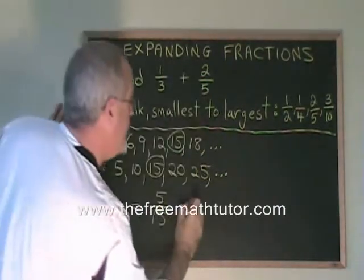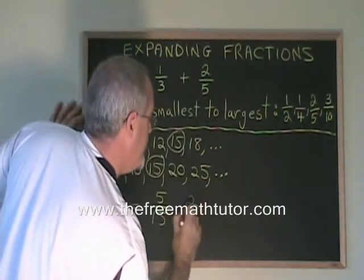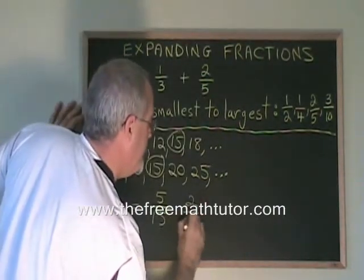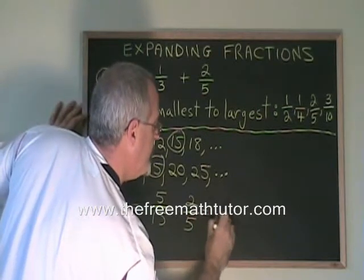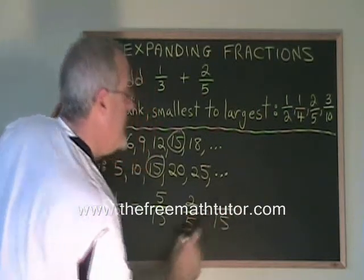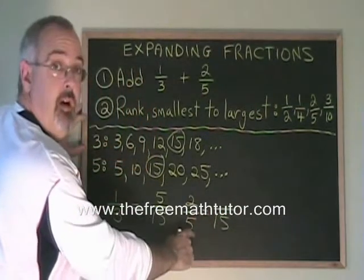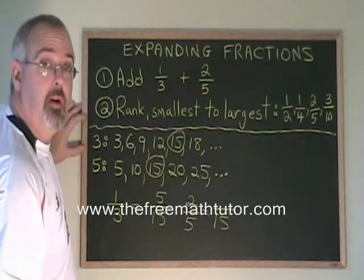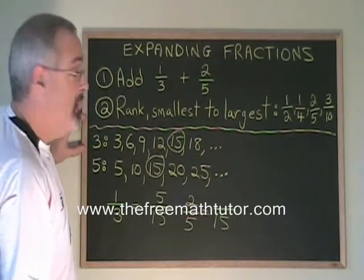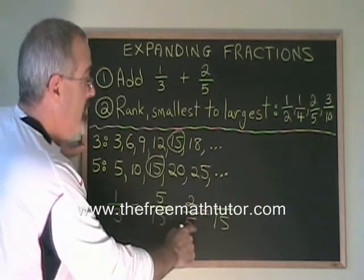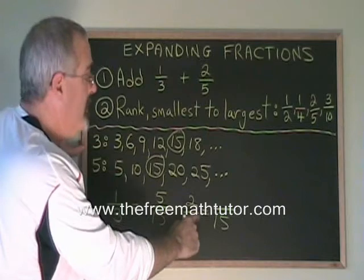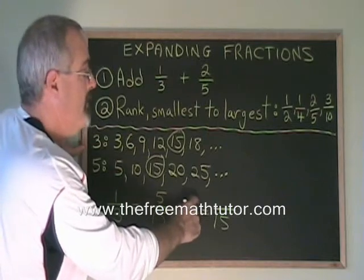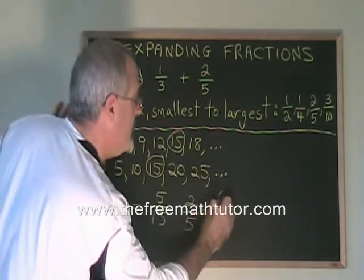Now let's do 2/5. To get 5 to turn into 15, we have to multiply it by 3. What we do to the bottom, we have to do to the top, so we multiply the top by 3. 2 times 3 is 6.